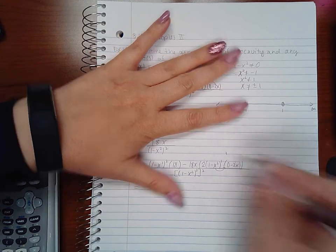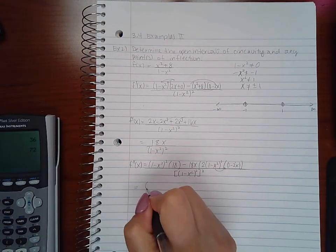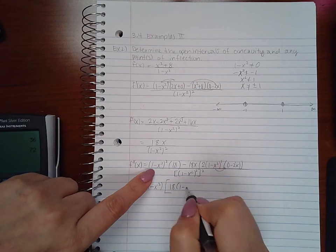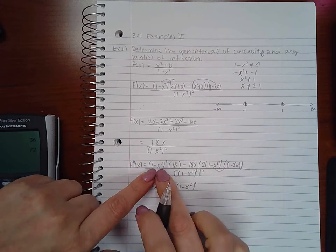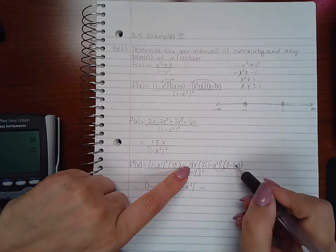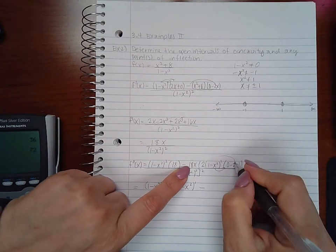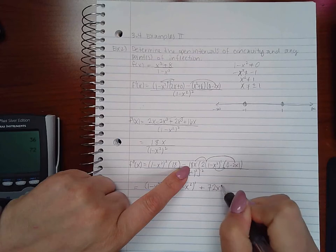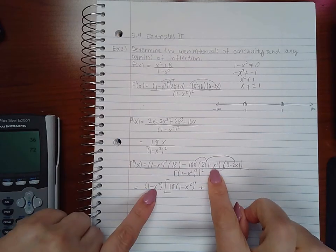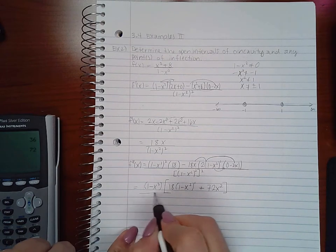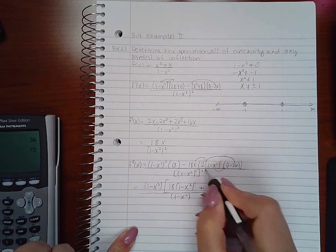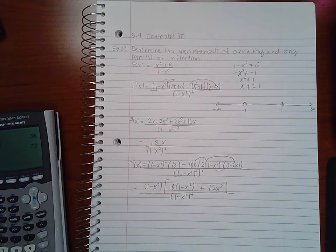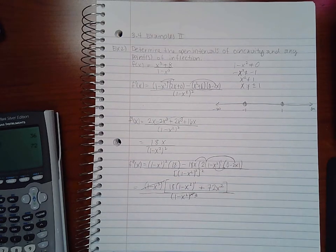So I'm going to factor out (1 - x²). Then I'm going to have 18 times (1 - x²)—one of them that will still be left over from this factor—minus I can still multiply my monomials together, which will give me 72x². This (1 - x²) is being factored out, and in the denominator you have (1 - x²)² squared, which is to the fourth power downstairs. So then this will reduce with one of them here, leaving me with only 3 downstairs.